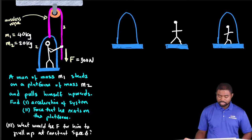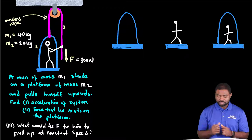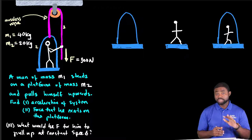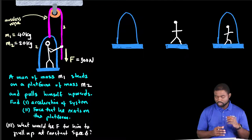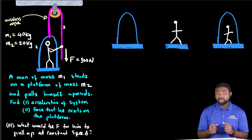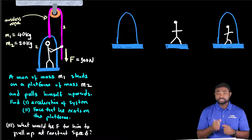The question is: we need to calculate the acceleration of the system and the force that he asserts on the platform. The third question is what would be F for him to pull up the system at a constant speed?